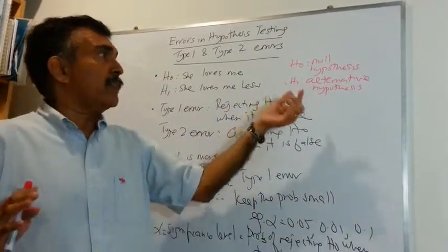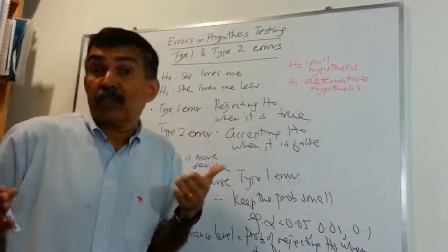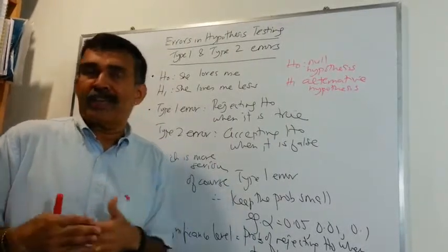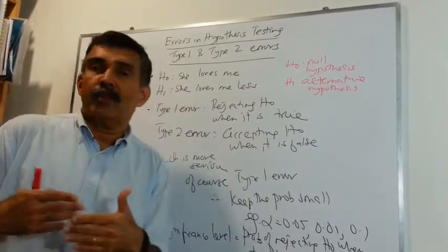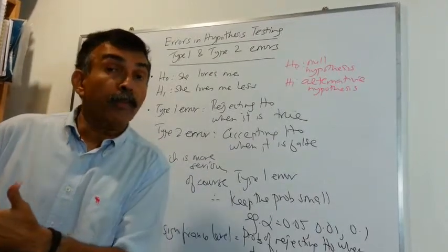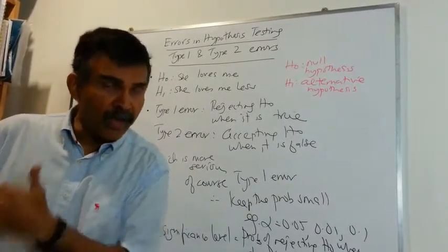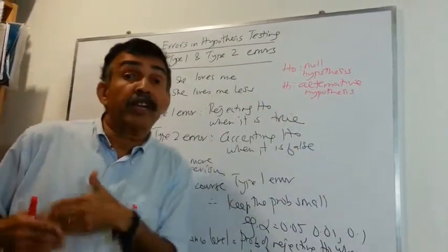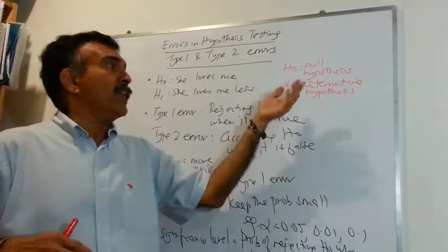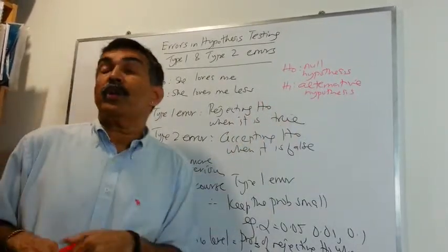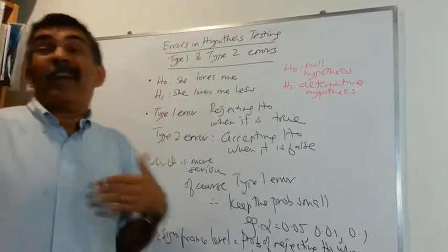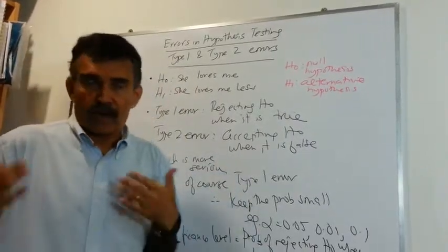So again, H0 is the null hypothesis. In simple language, it is the belief that you have in the value of a population parameter. H1 is the alternative hypothesis and we are going to talk about some errors in hypothesis testing.